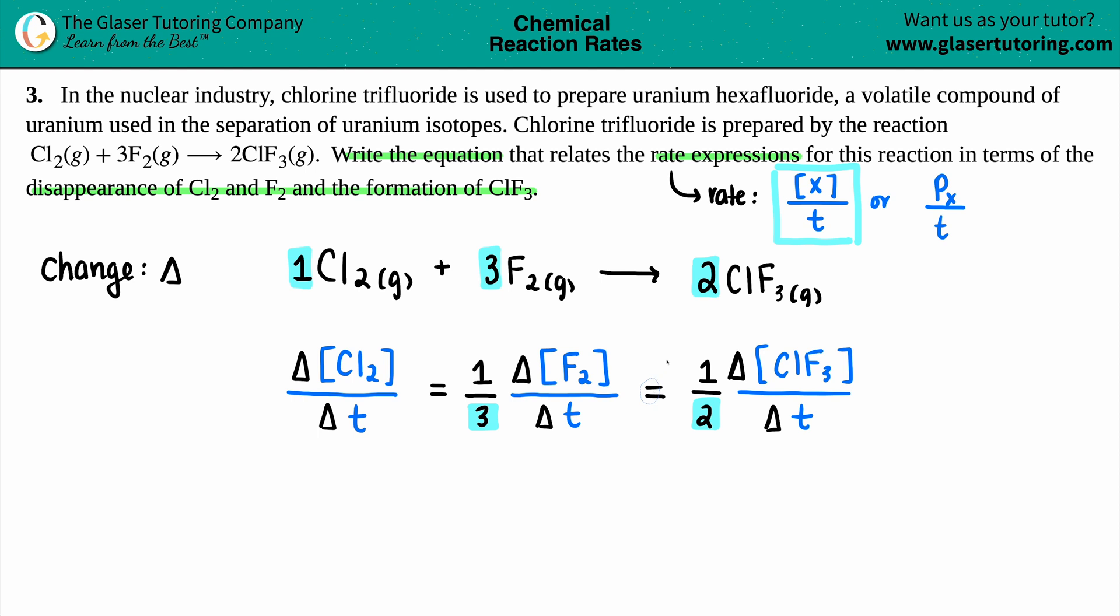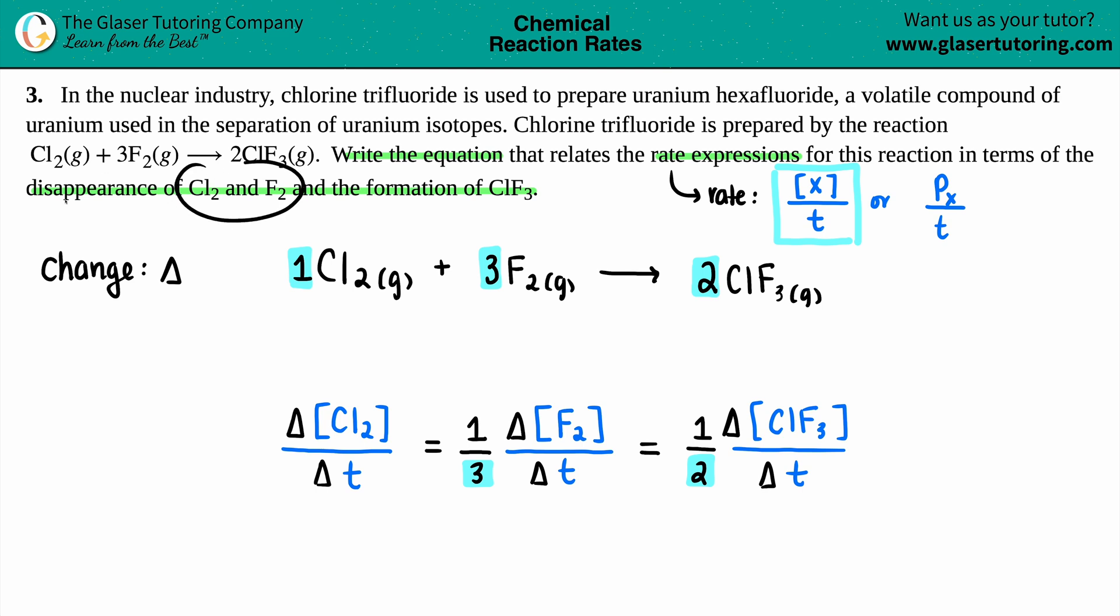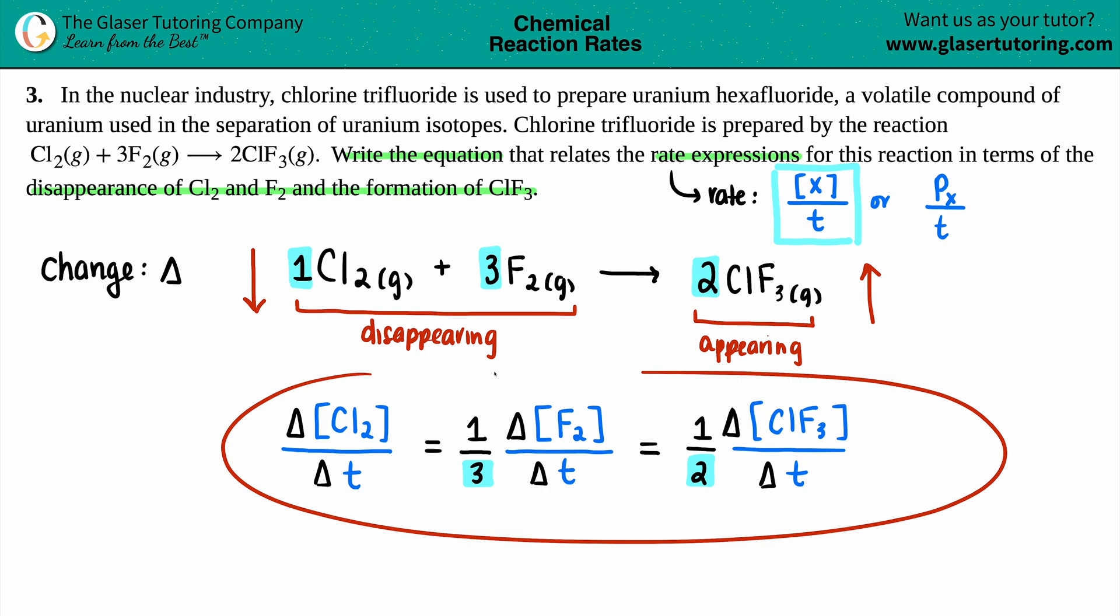Now we got one last thing. We have to show that Cl2 and F2 are disappearing and ClF3 is forming. And we know that as this reaction is progressing, your reactants are always going to be disappearing. And as these are disappearing, your products are going to be appearing or forming. We can also say this, that as the left side is dropping, the right side is increasing. We write that into our equation as negatives and positives. If this side is dropping, that's the negative sign. The appearing side is the positive.